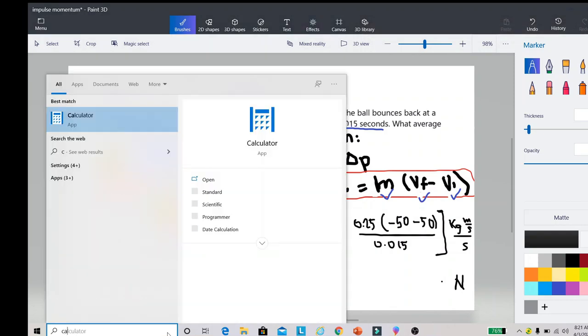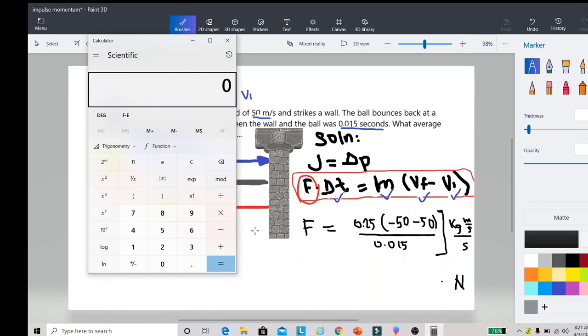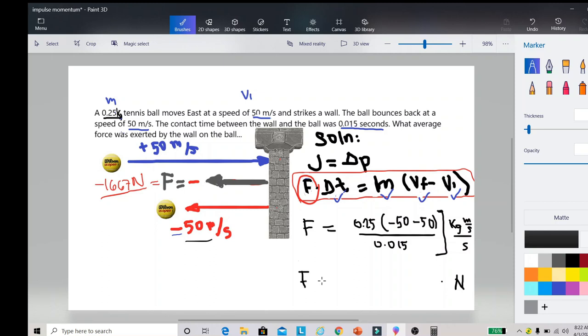Let us try to grab a calculator and solve for this value. That will be negative 100 times 0.25, that will be negative 25 divided by 0.015. We will be arriving at the value of negative 1,666.667 if we are adapting four decimal places. Take note that this one is negative, and we are arriving at the correct answer because the force that was exerted by the wall is going to the left.